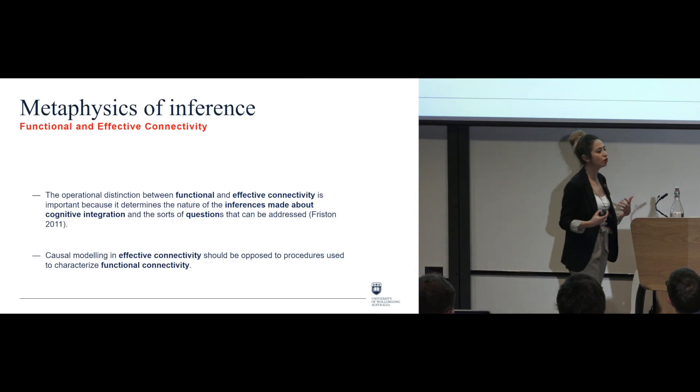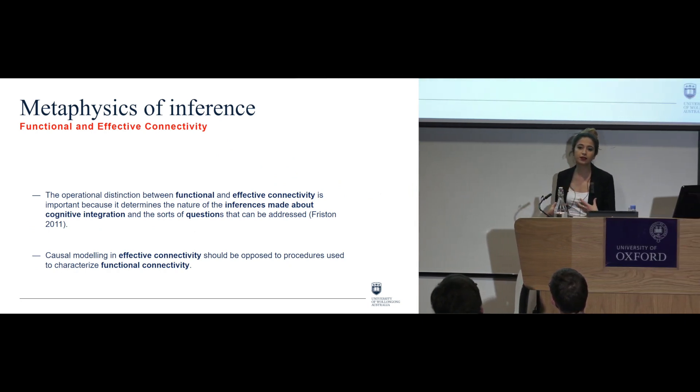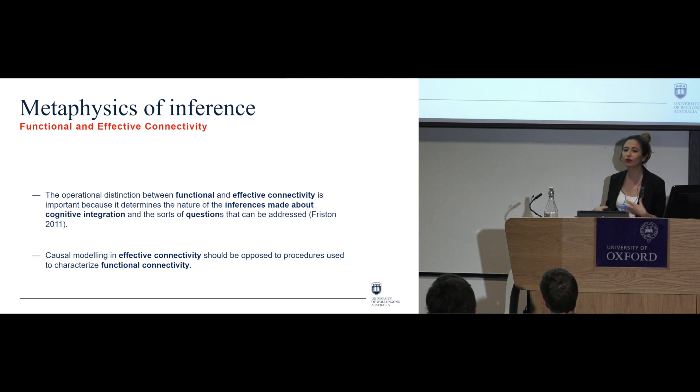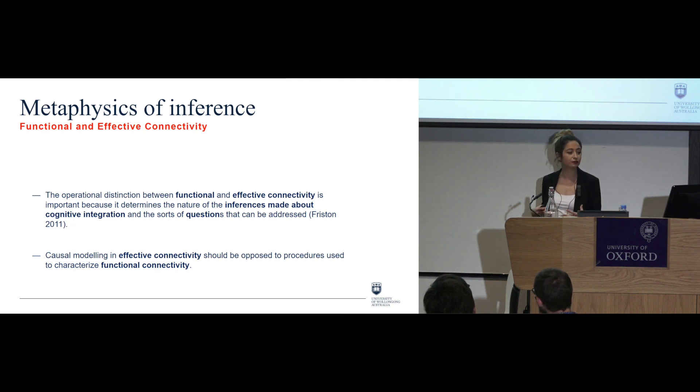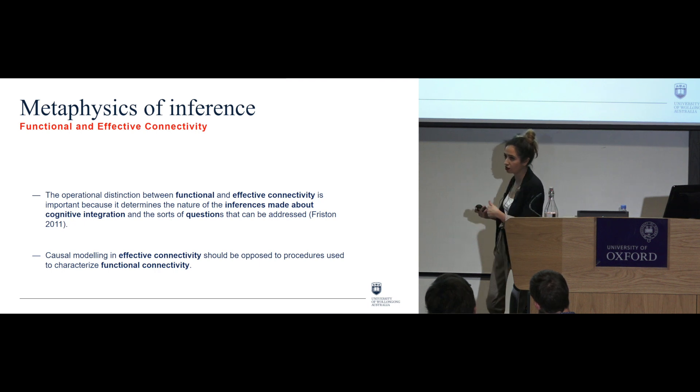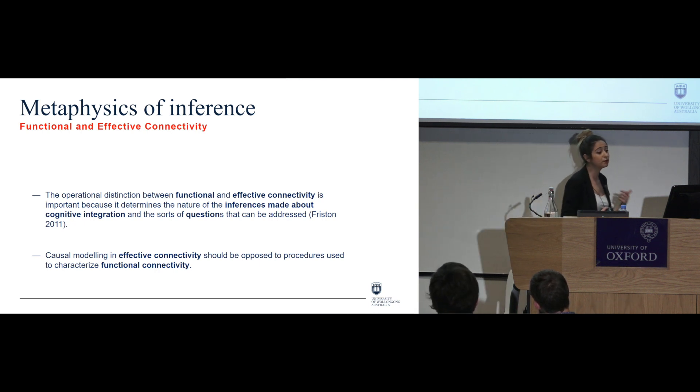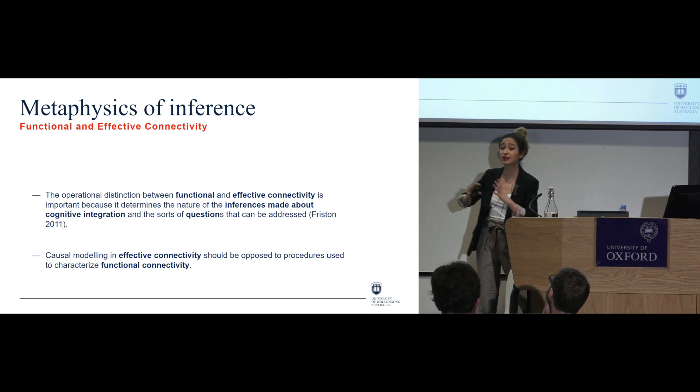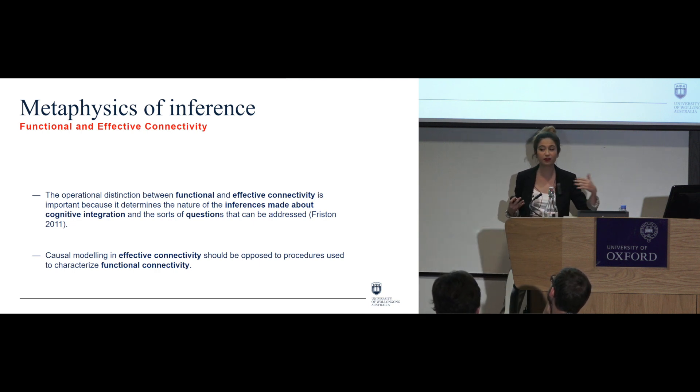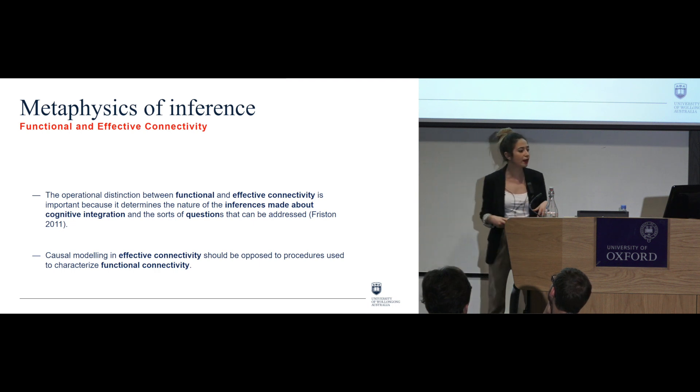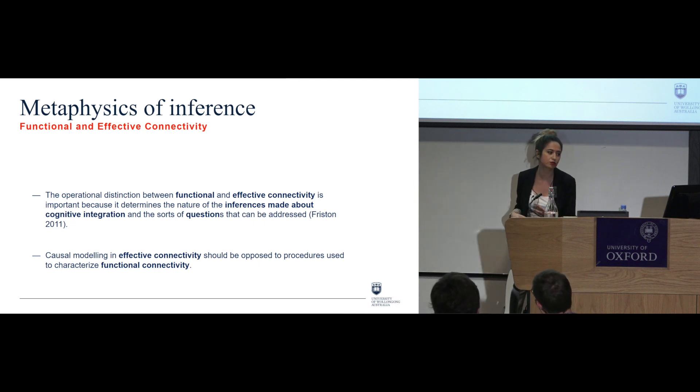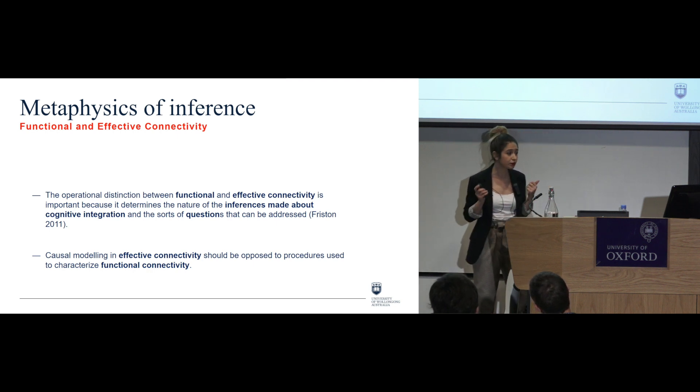So first I want to just focus on the motivation. Okay, so the idea here is that there is this operational distinction between functional and effective connectivity and this is important because it allows us to determine the nature of the inferences that can be made about cognitive integration and also most importantly the questions that one should be asking. And I'm following here Friston in doing so. So what I want to do is just look at the differentiation on the one hand under causal modeling in effective connectivity and on the other hand as it is opposed to the procedures used to characterize functional connectivity.